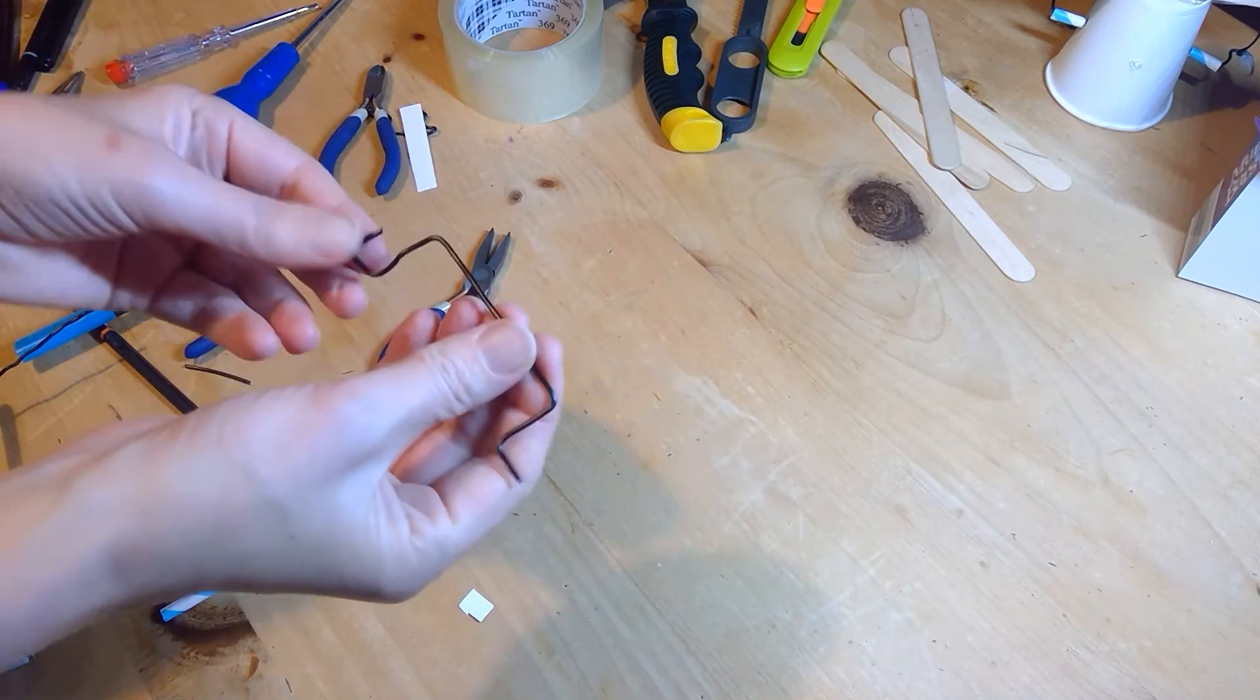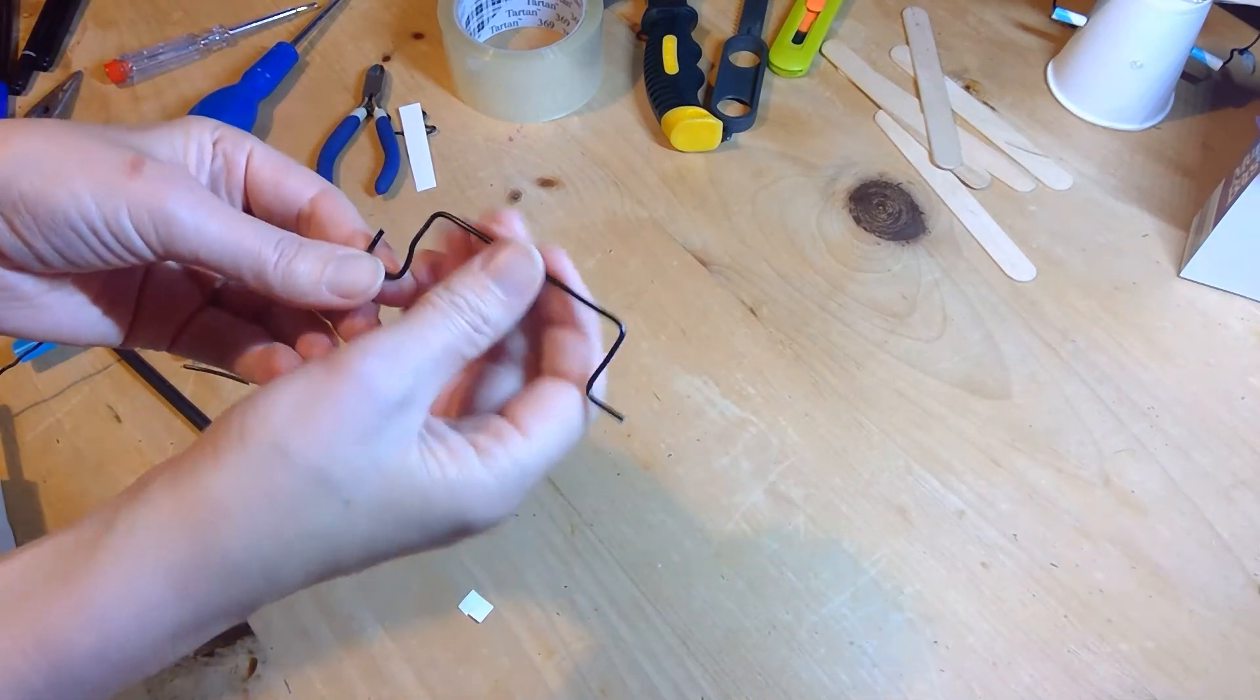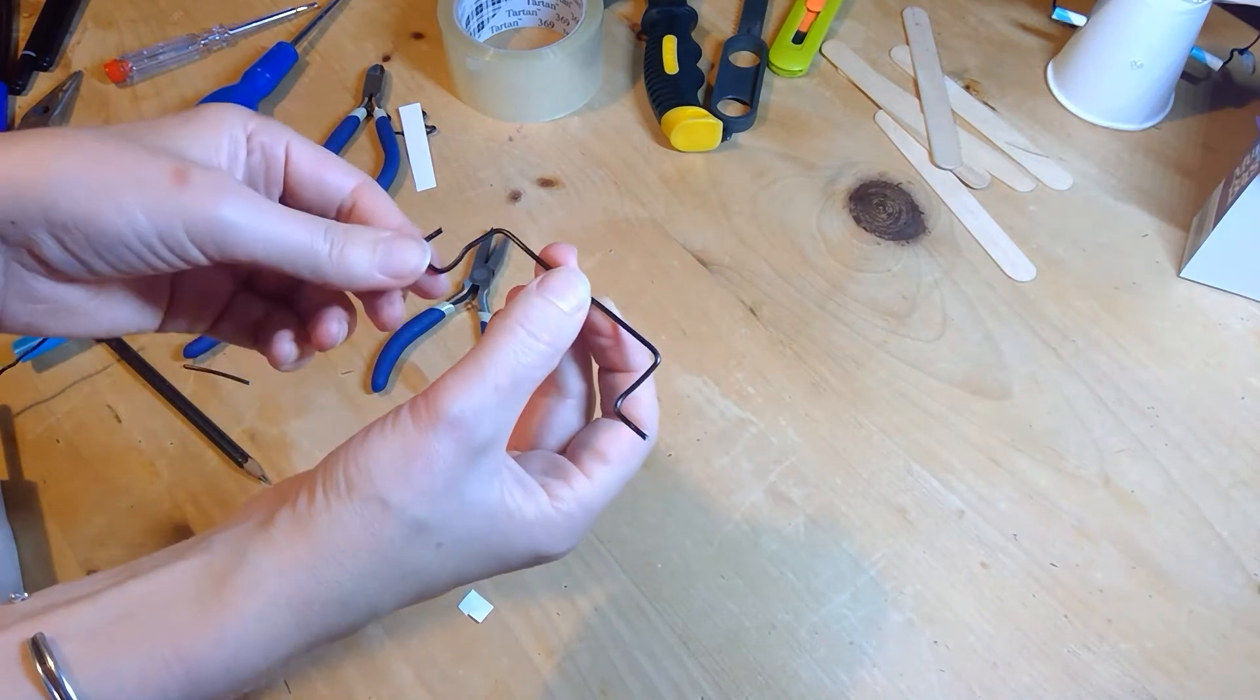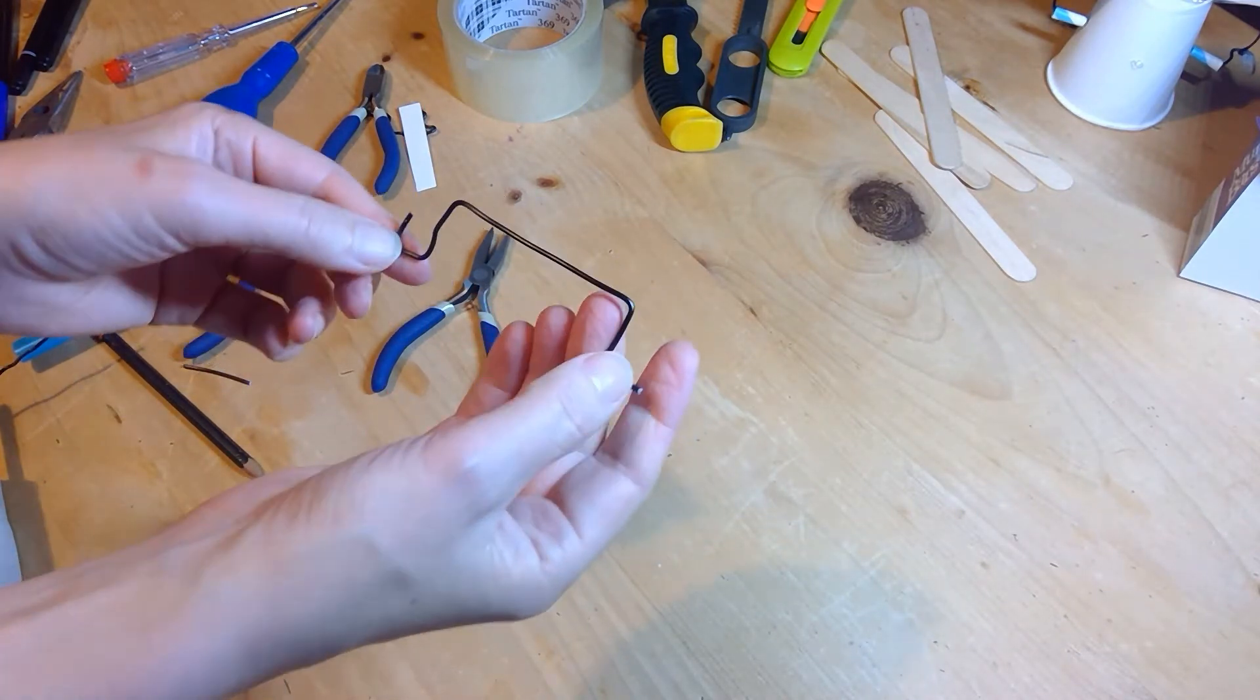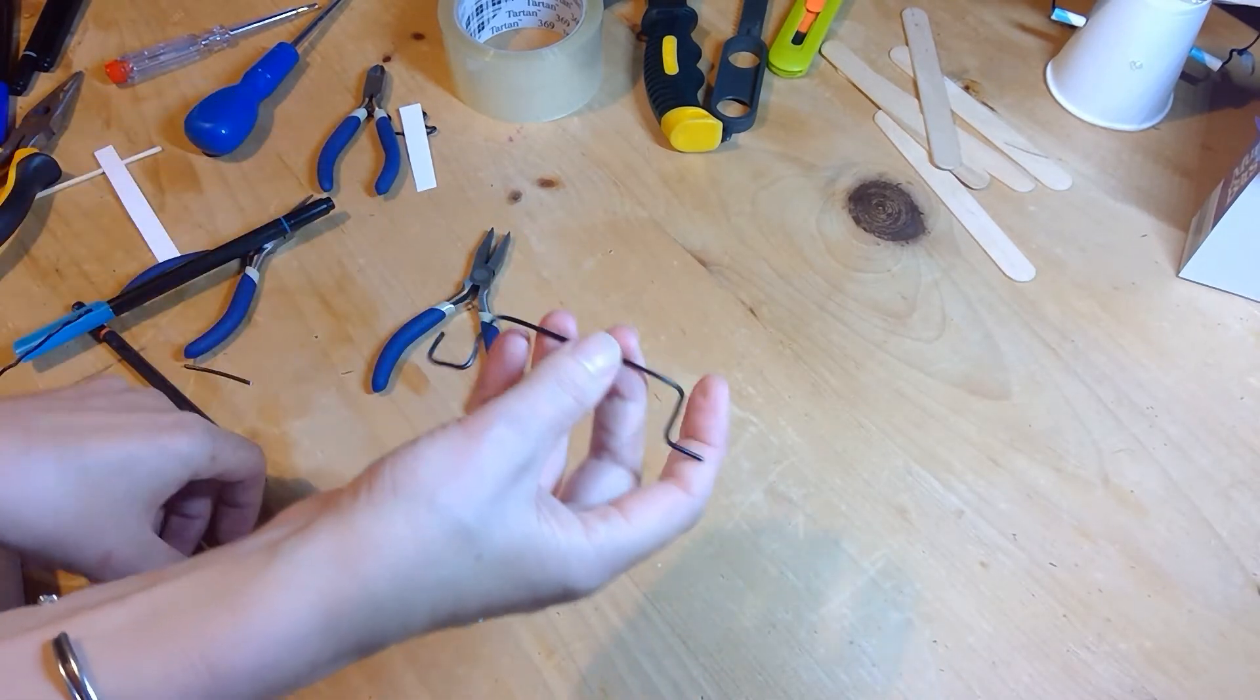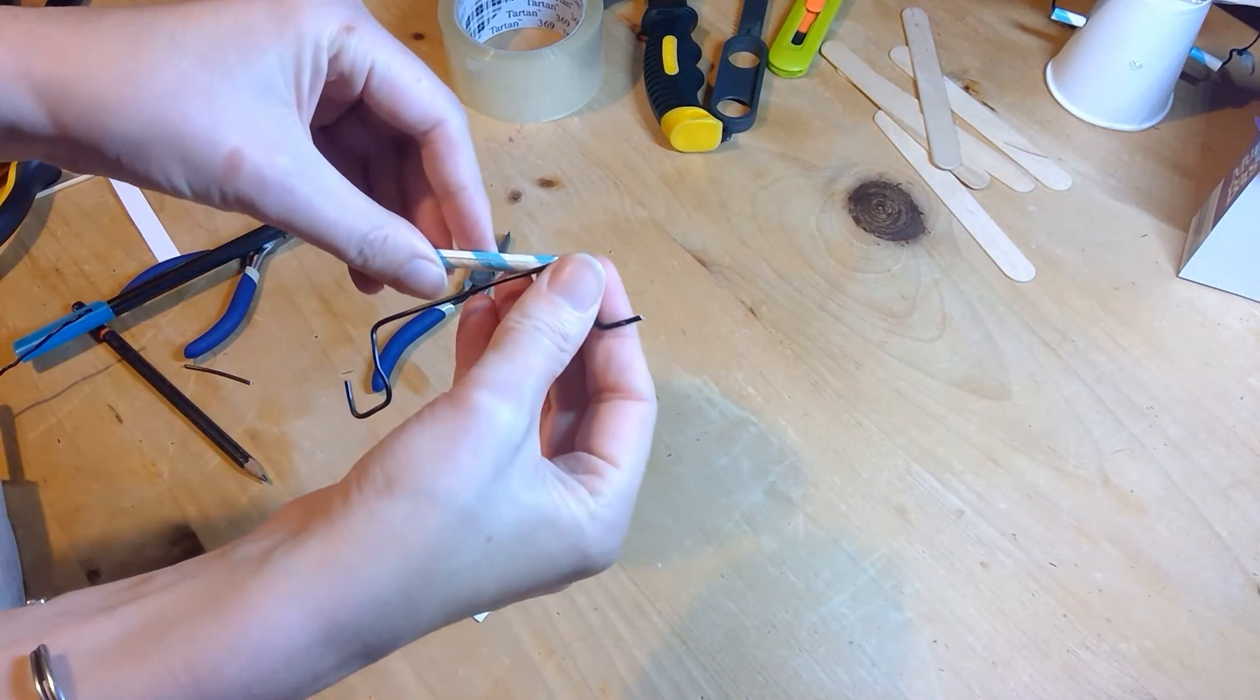By bending wire into certain shapes, we can make some mechanical objects. So here we're going to make something called a crankshaft. Now this is just a bent piece of metal, but what it allows us to do is if we were to pop it in some tubing here.